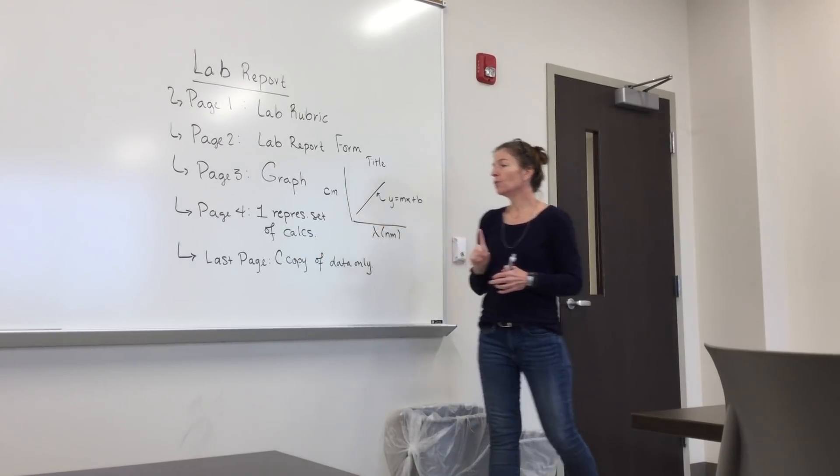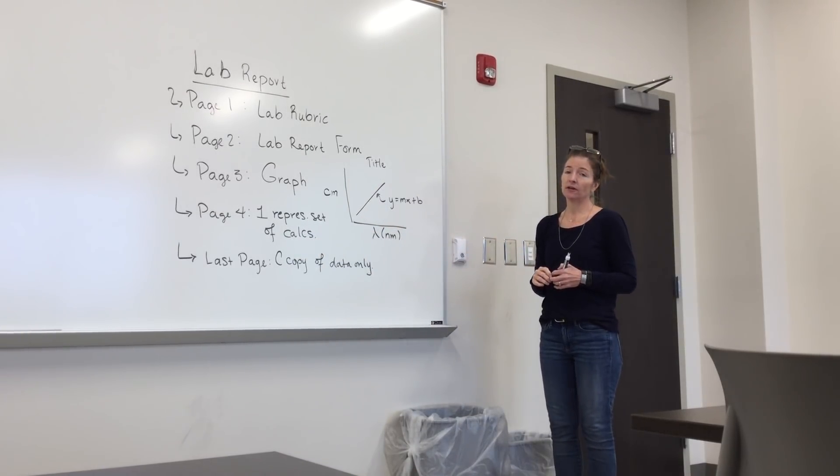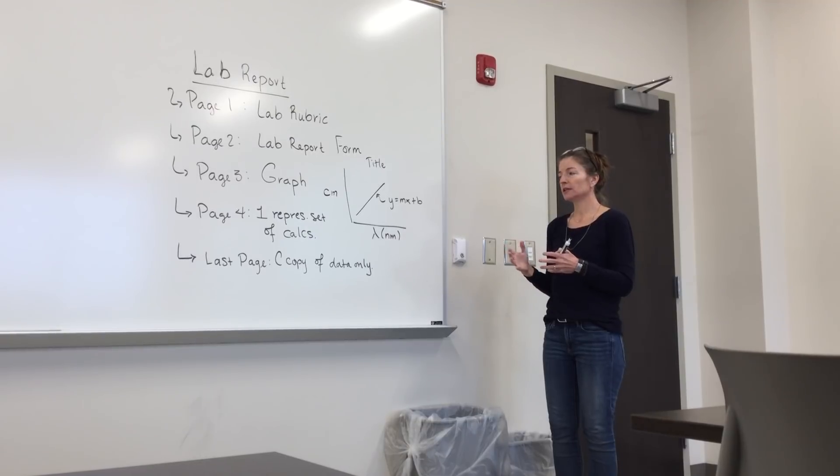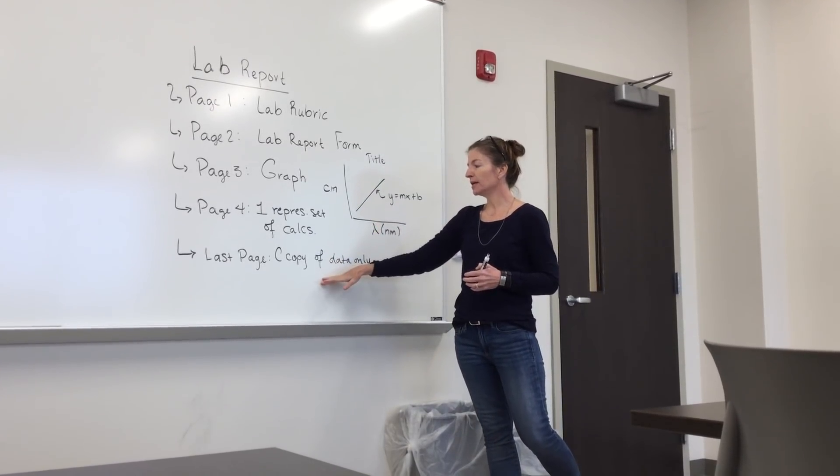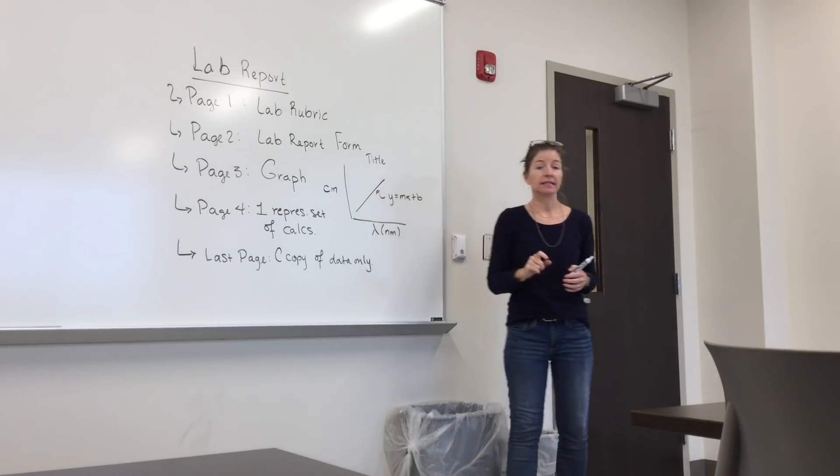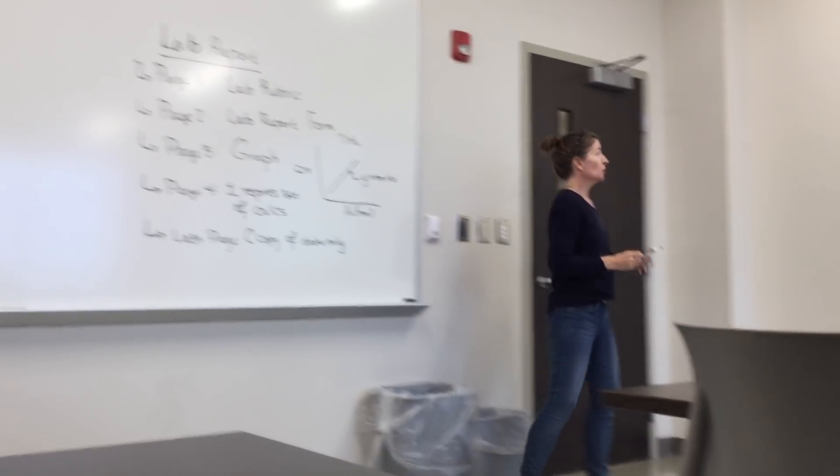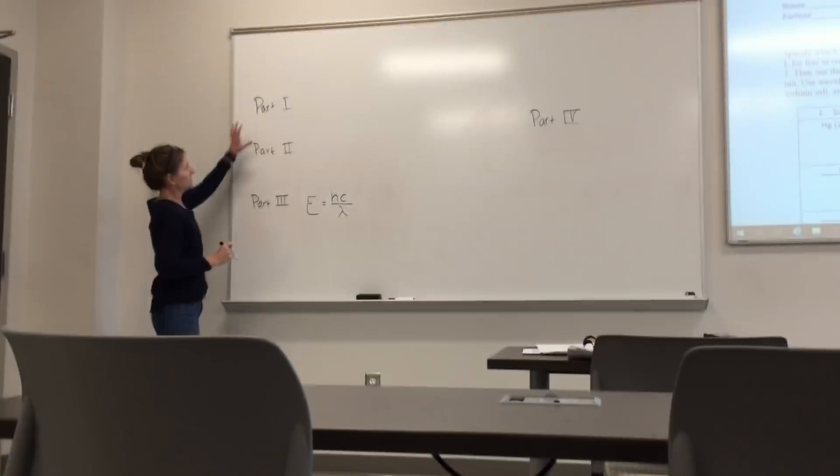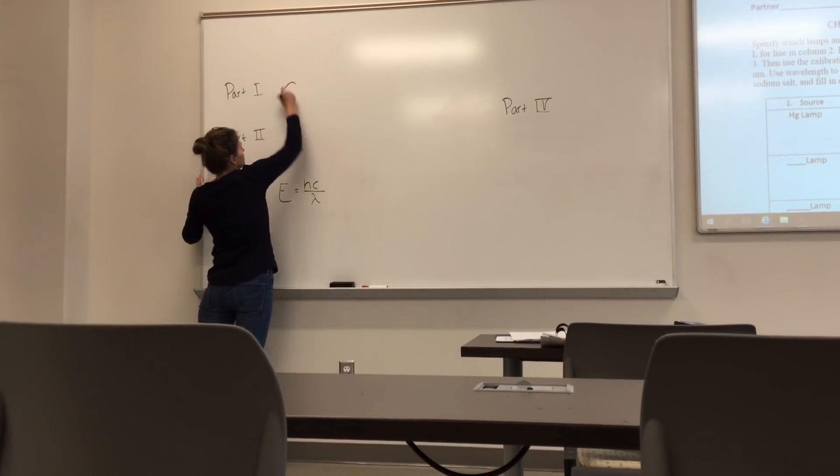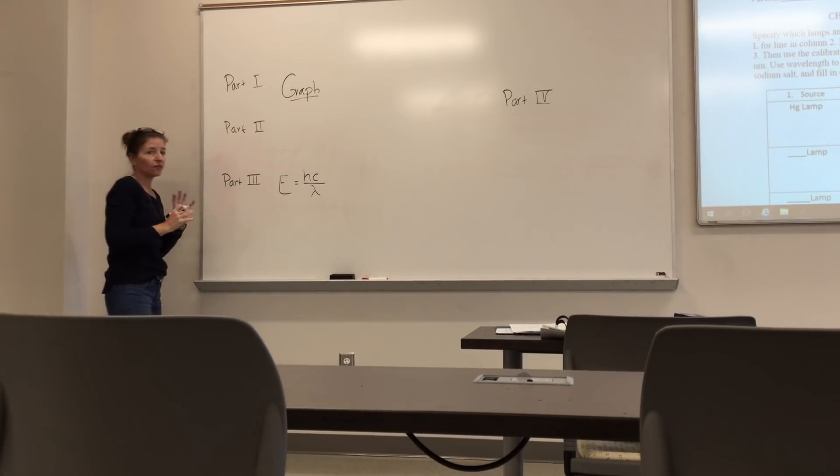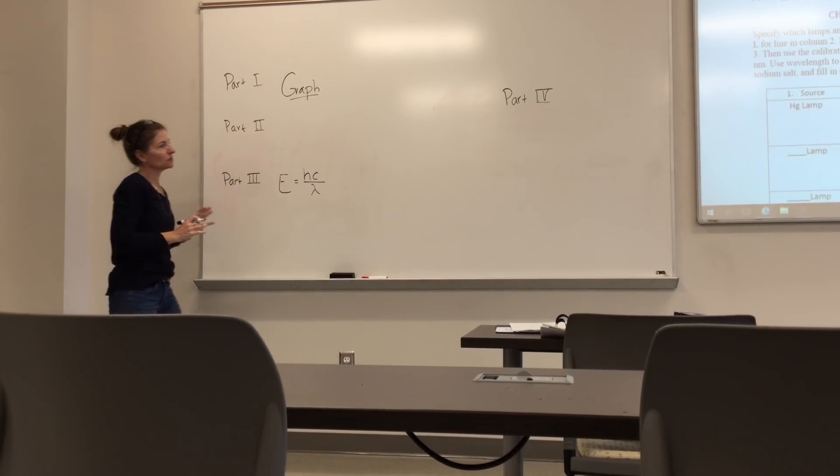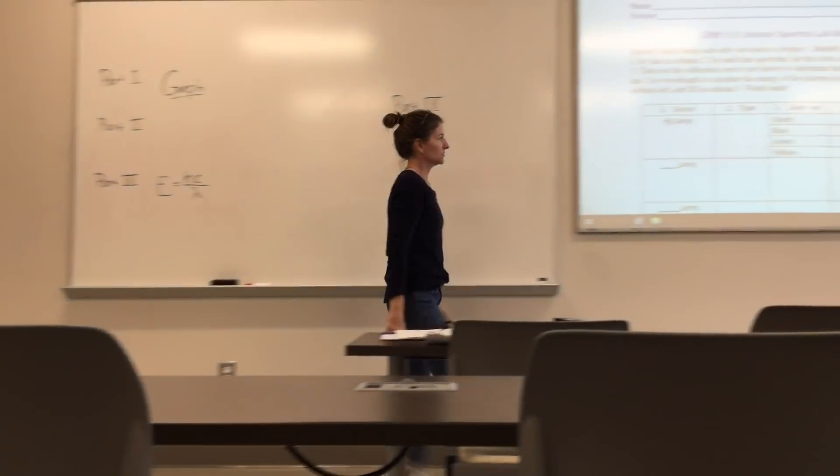Page four, I just need one representative set of calculations. So if it's a new calculation, you need to show it. Very short area though. And then the last page is the carbon copy of the data only. So part one, we've got the four parts essentially to this lab. And you need that graph first before you can do anything else.